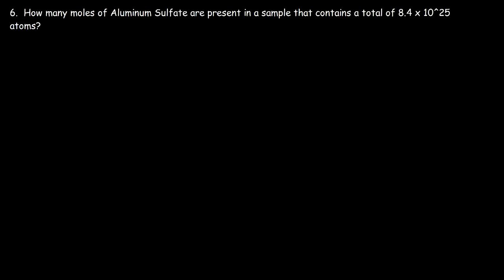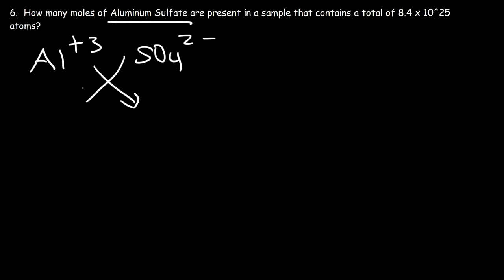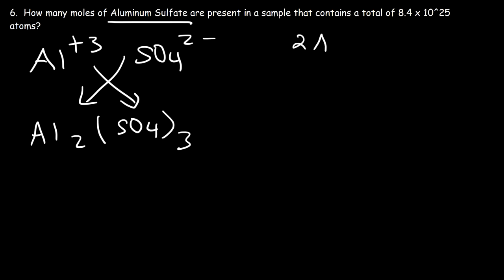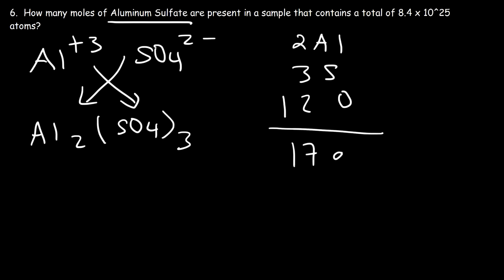Number 6: how many moles of aluminum sulfate are present in a sample containing a total of 8.4 times 10 to the 25 atoms? We're given atoms and need to find moles. Writing the formula: aluminum has a +3 charge, sulfate has a −2 charge, giving Al₂(SO₄)₃. There are 2 aluminum atoms, 3 sulfur atoms, and 4 × 3 = 12 oxygen atoms — so 17 atoms total in one formula unit of aluminum sulfate.